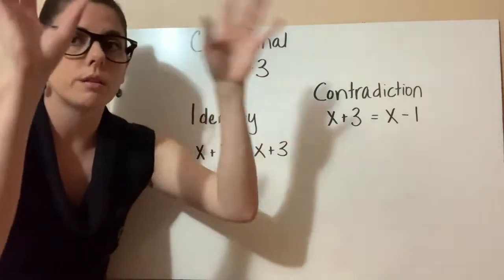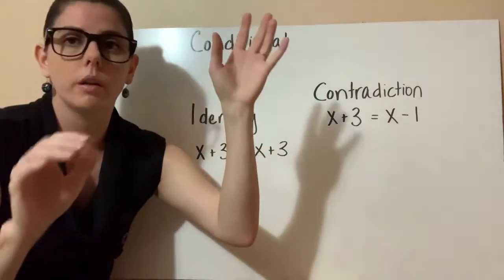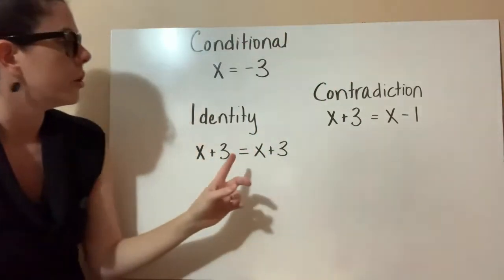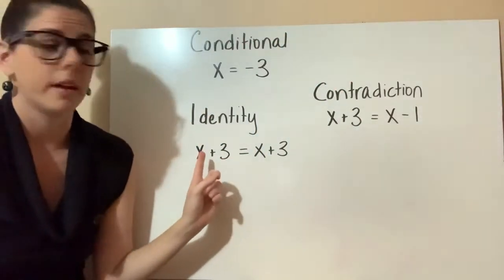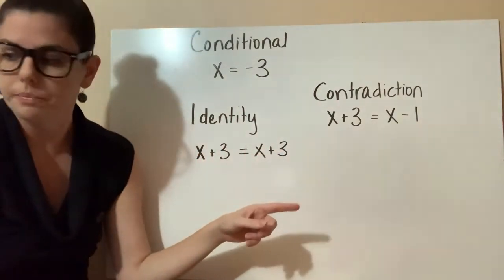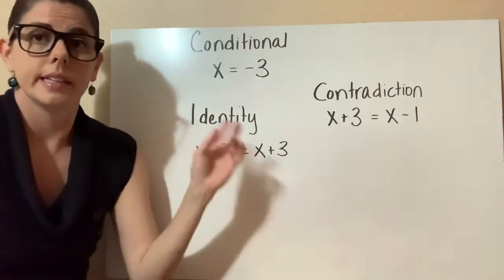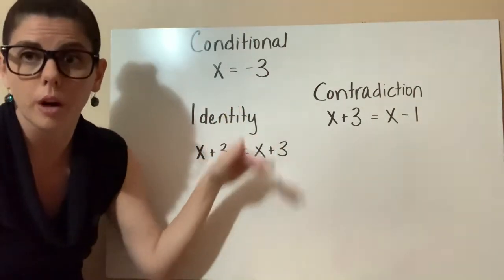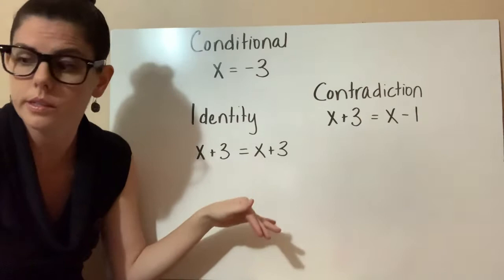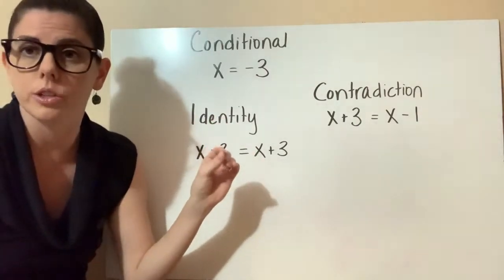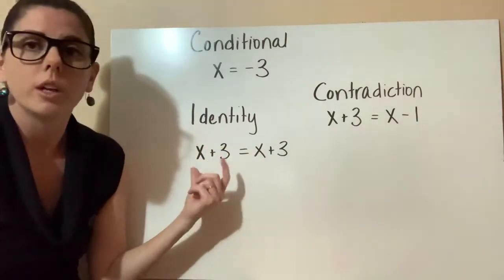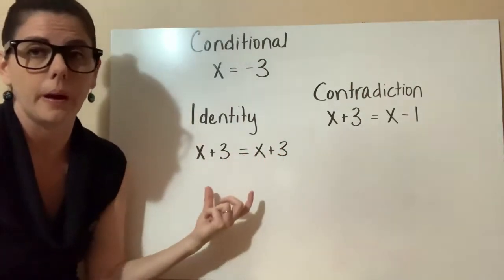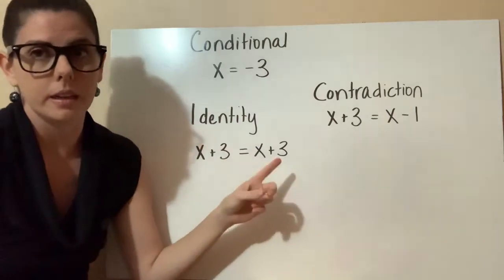So sometimes when you're working through, you're doing your properties of equality and combining like terms, trying to get everything together, you might end up with something like x plus 3 equals x plus 3. Once you get something like this, you could use your properties of equality and work through this if you wanted to, and I'll do that in just a minute. But once you get something like this, where it's exactly the same on one side as it is on the other, this is called an identity equation.